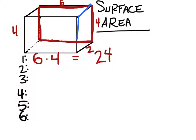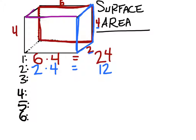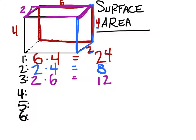It doesn't matter which order we do these in. Let's do the right surface now. We can see one dimension is 2, the other is 4, so it's 2 by 4. Now, I did make a mistake there — 2 times 4 is 8, not 12. My mistake. Now let's look at the top surface: its width is 2 and its length is 6, so 2 by 6 gives us 12 square units.